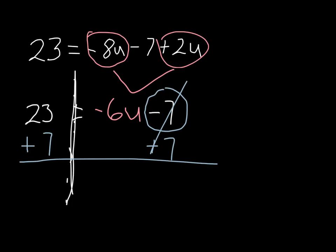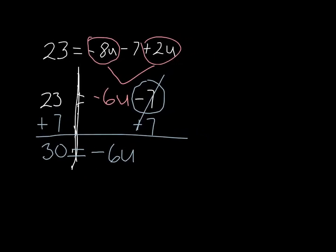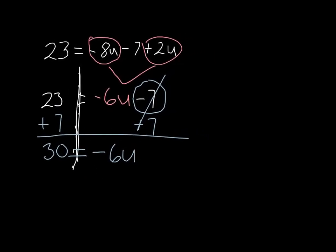My result is 23 plus 7 is 30, bring down the equal sign, bring down the minus 6u. Now I want to continue to get the u isolated or by itself, and it's being multiplied by negative 6, so I'm going to divide by negative 6.